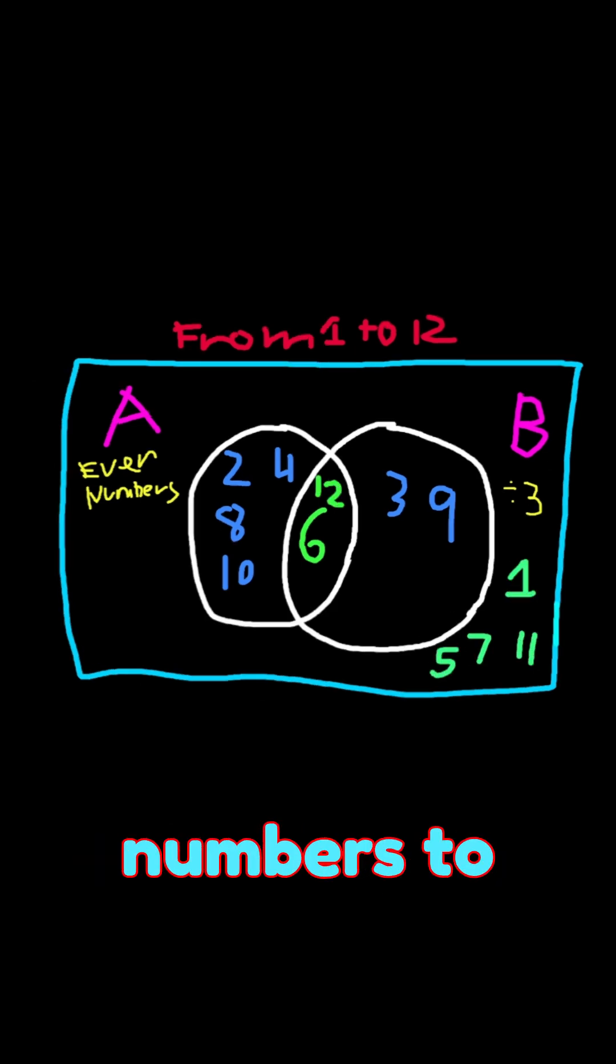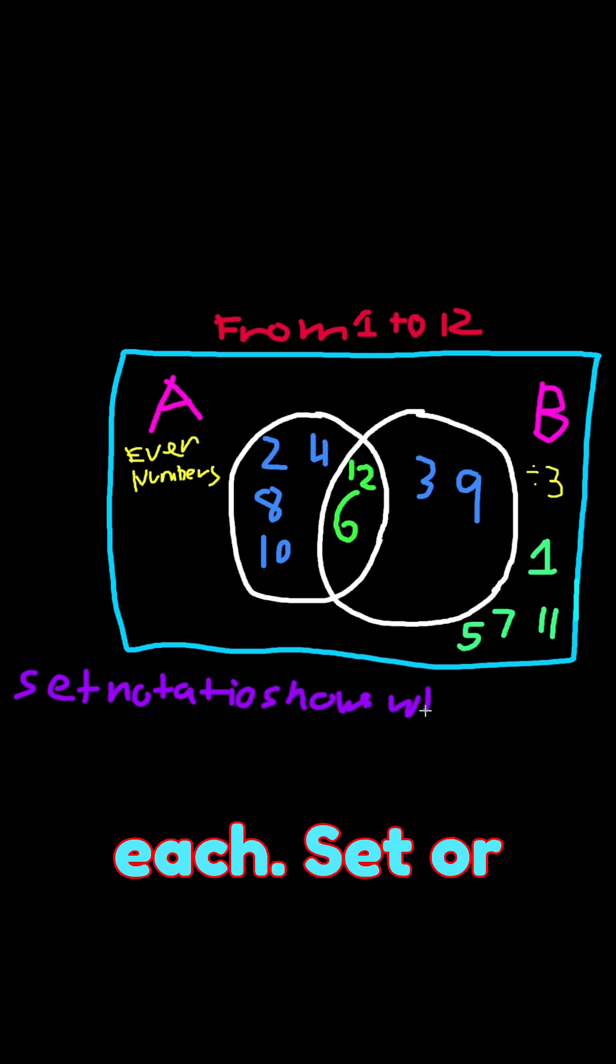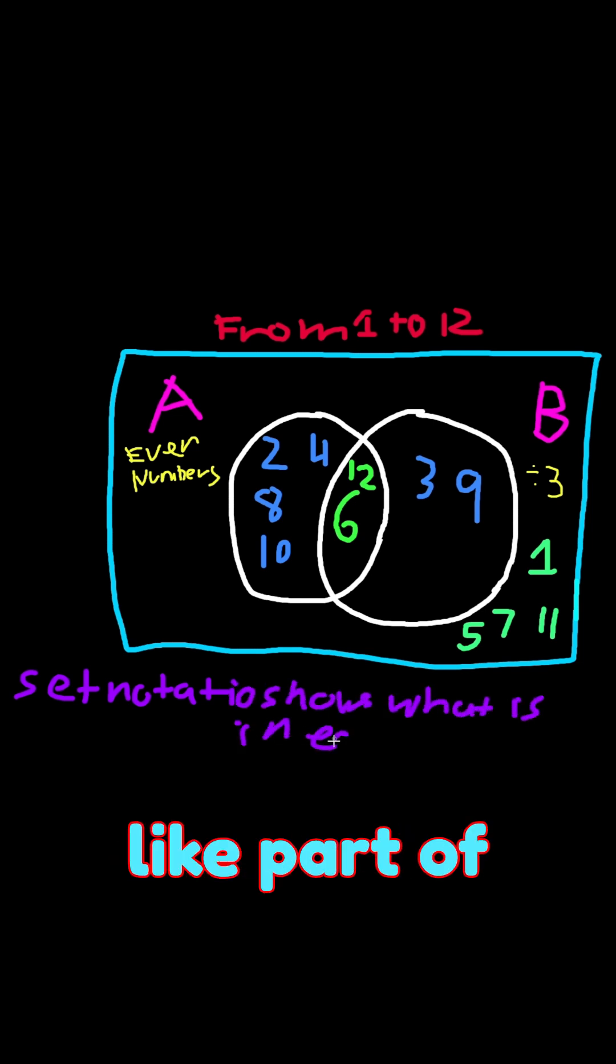So essentially, we're just sorting numbers into categories. Now here's where set notation comes in. It's a quick way to write down what is inside of each set, or parts of the diagram.